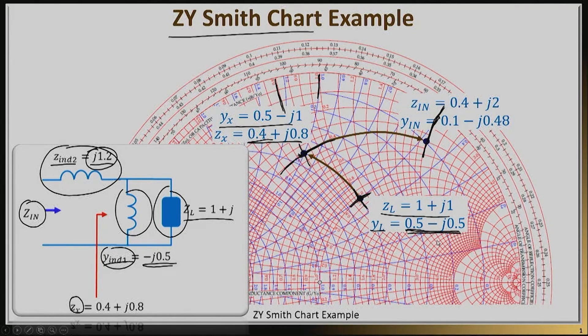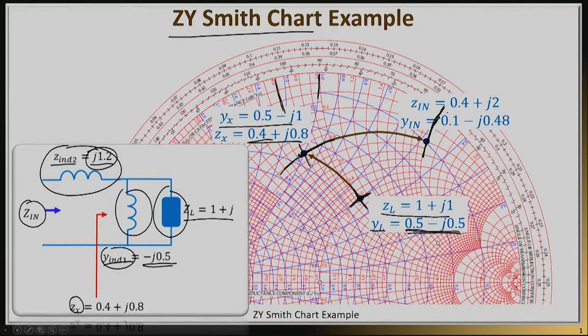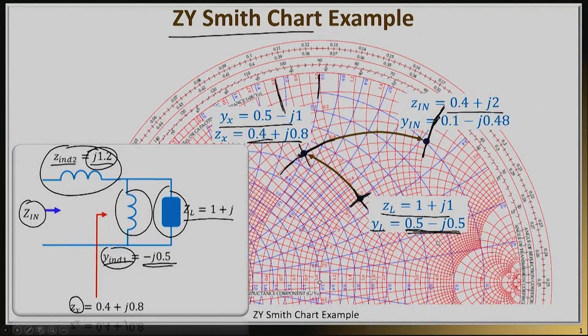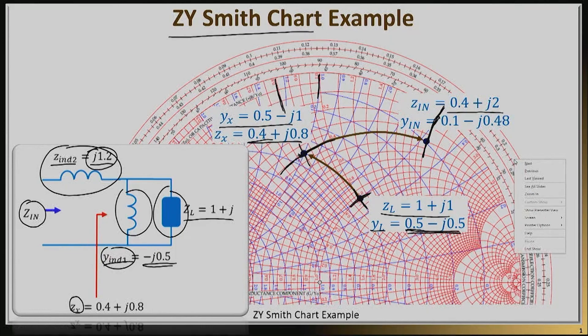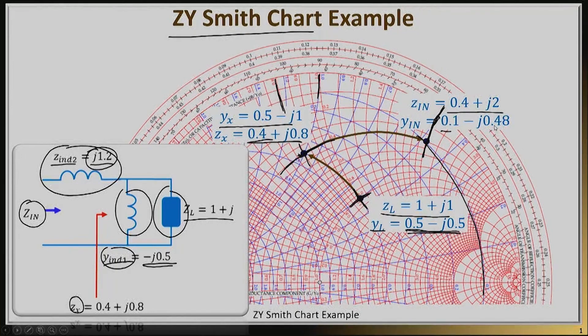My ending point, Zin, will have 0.4 plus j2 impedance. If you want to find the admittance, the Y part, you can read it from the Smith chart. You're on the circle of 0.1, so the real part equals 0.1, and the imaginary part is slightly less than negative j0.5, so it's negative j0.48. That concludes the solution.